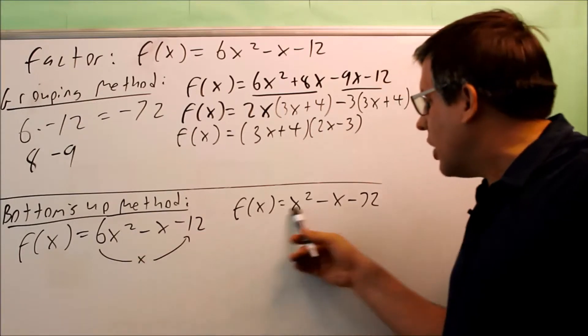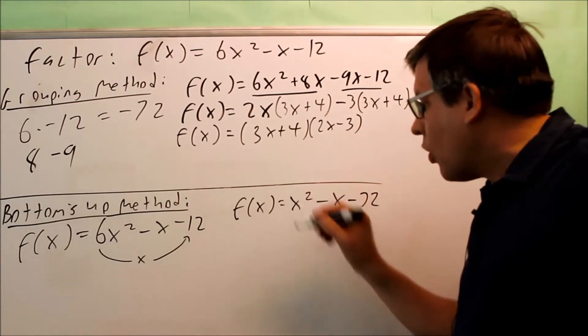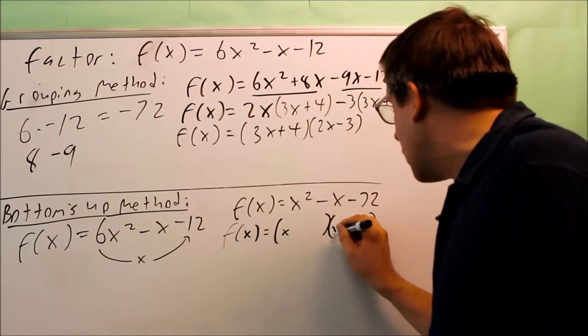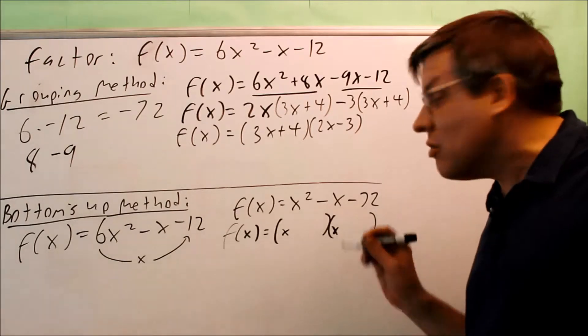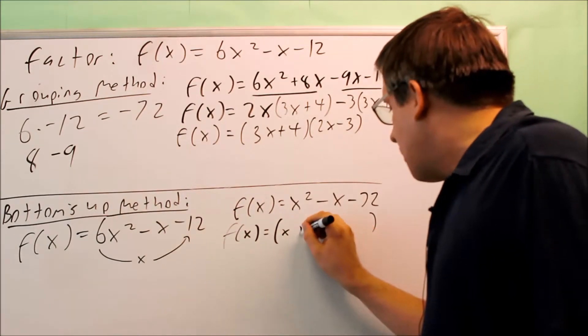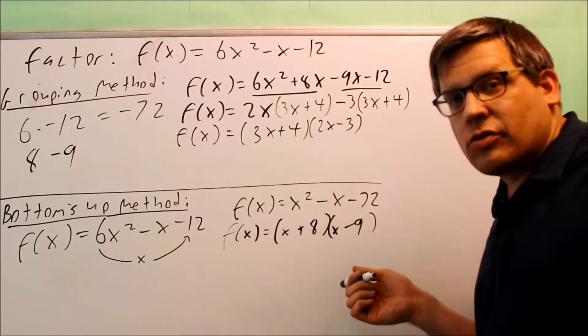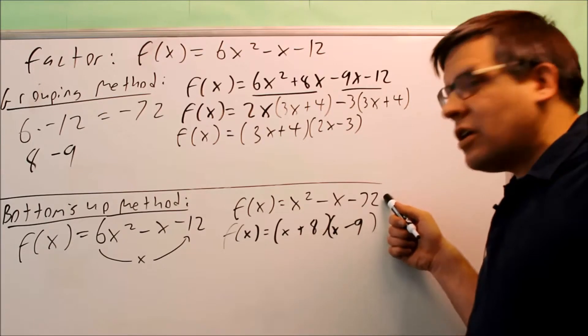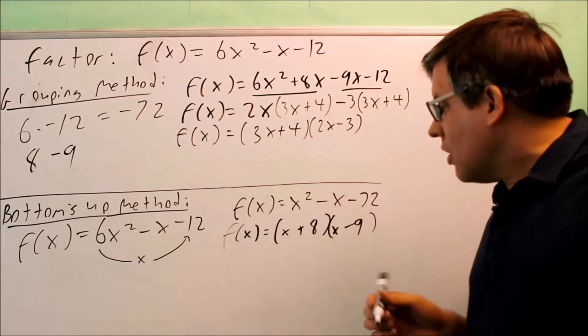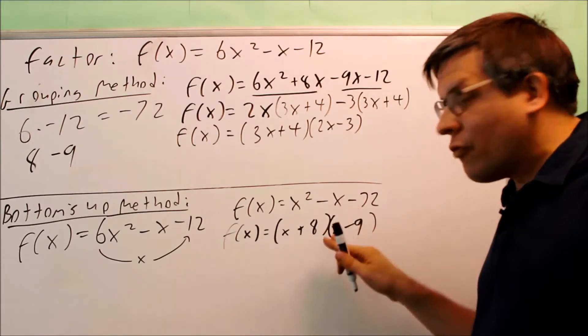So because we've changed the problem into this, now there's a 1 in front of the x squared. So that's going to make it easier to factor. Now we can just use our normal factoring technique. We look for what two numbers multiply to make negative 72 and add to be negative 1. That's going to be the same numbers we came up with earlier, plus 8 and negative 9. Now, a common mistake for using this method is to leave the answer as this. Well, if I multiply that out, I get this right here, but it doesn't give me the original one I started with. So here's what you have to do with bottoms up. Once you get done and go down to this step, there's another step that you have to complete.